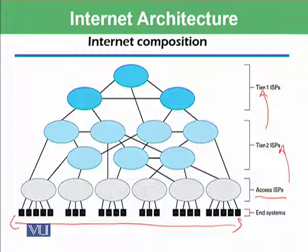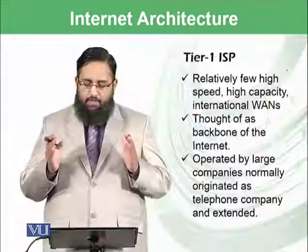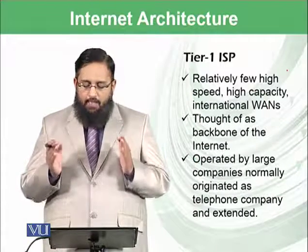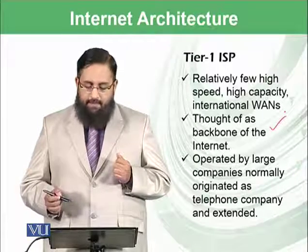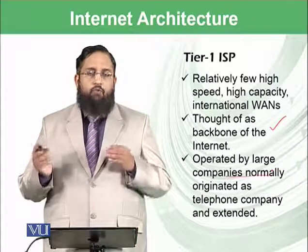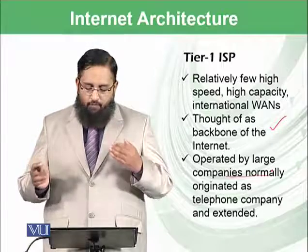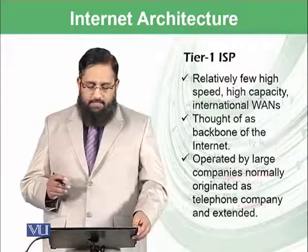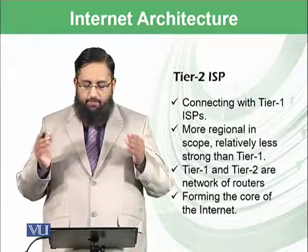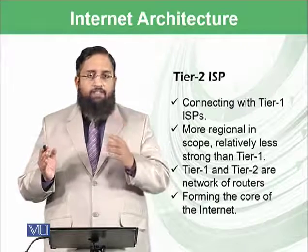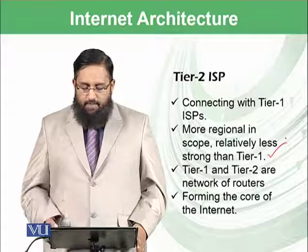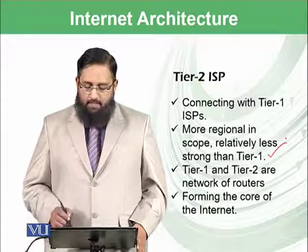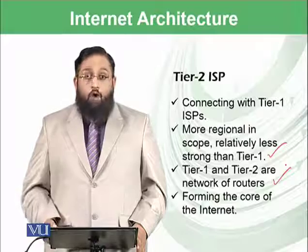Starting from Tier 1 ISPs: these are relatively few high-speed, high-capacity internet wide-area networks, and they are thought of as the backbone of the internet. They are operated by large companies that normally originated from telephone companies and then extended into the internet business. Tier 2 ISPs are connected with Tier 1 ISPs; they are more regional in scope, not worldwide, and relatively less powerful than Tier 1 ISPs. However, Tier 1 and Tier 2 ISPs together form a network of routers forming the core of the internet.